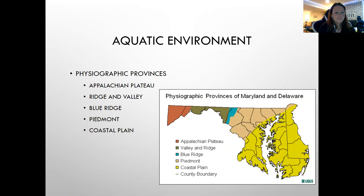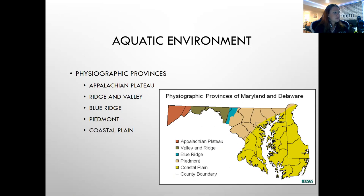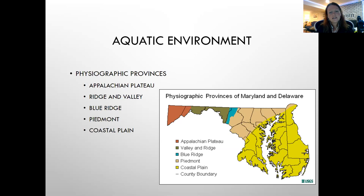Definitely know the physiographic provinces of Maryland: the Appalachian Plateau, Ridge and Valley, Blue Ridge, Piedmont, and Coastal Plain. The Appalachian Plateau covers 6% of the state and is the only one that drains to both the Chesapeake Bay and the Gulf of Mexico. Ridge and Valley occupies about 12%, Blue Ridge about 5%, Piedmont about 29%, and Coastal Plain is the largest at about 48% of the state.